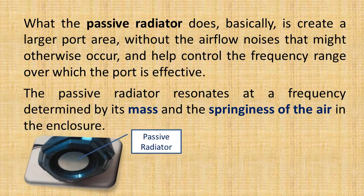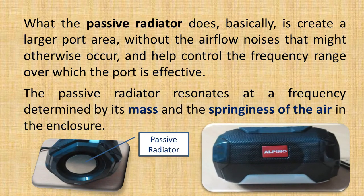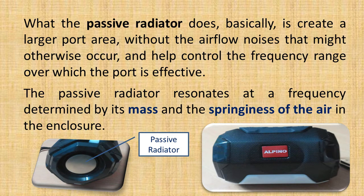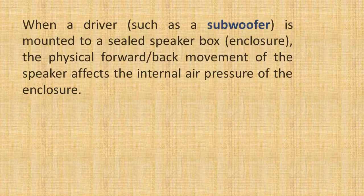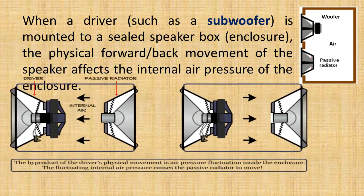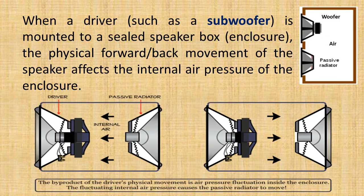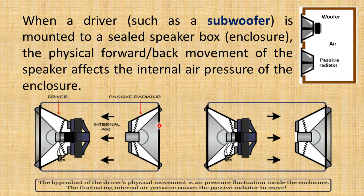The passive radiator resonates at a frequency determined by its mass and the springiness of the air in the enclosure. This one is the passive radiator on the Bluetooth speaker and this is the Bluetooth enclosure. When a driver such as a subwoofer is mounted to a sealed speaker box — that is, an enclosure — the physical forward and backward movement of the speaker affects the internal air pressure of the enclosure. The diagram shows the driver, passive radiator, and the internal air pressure moving forward and backward.